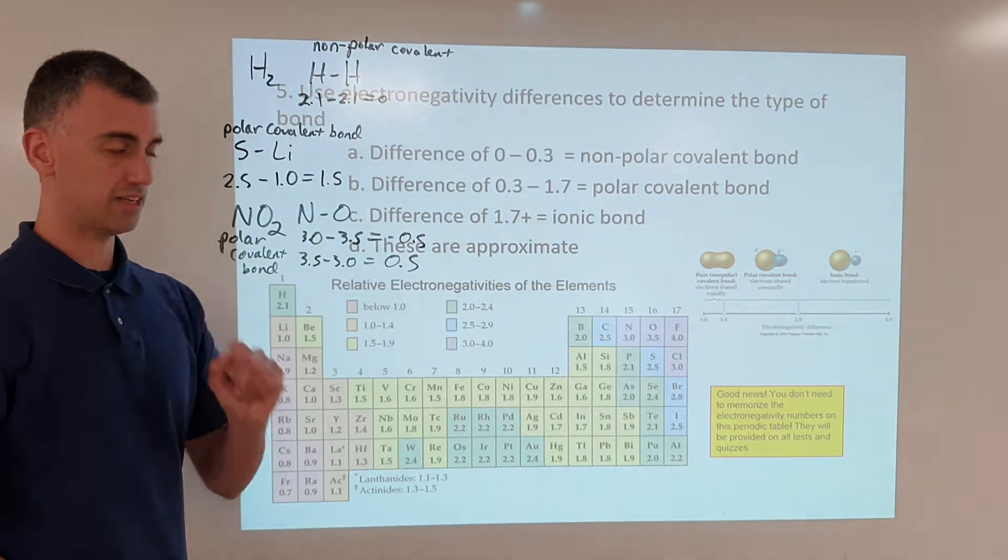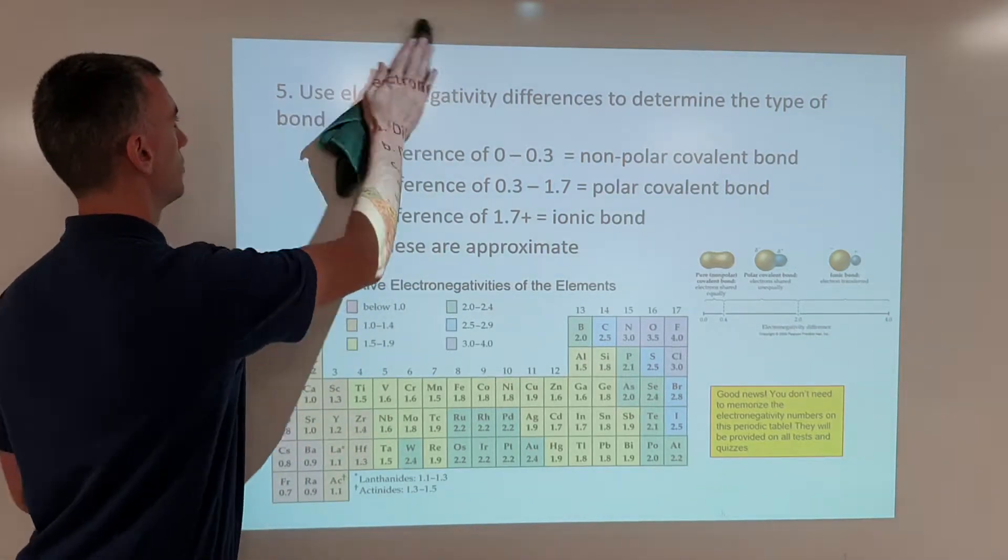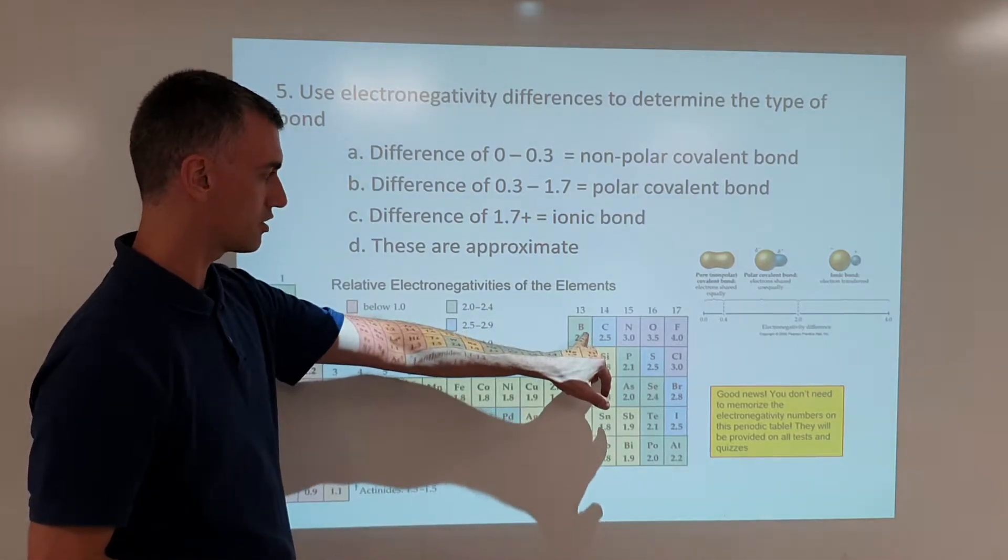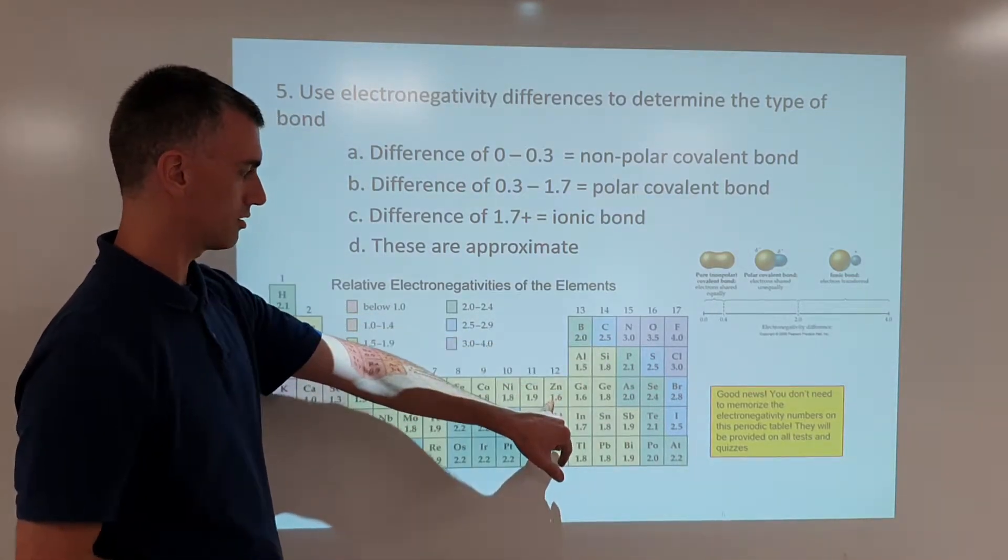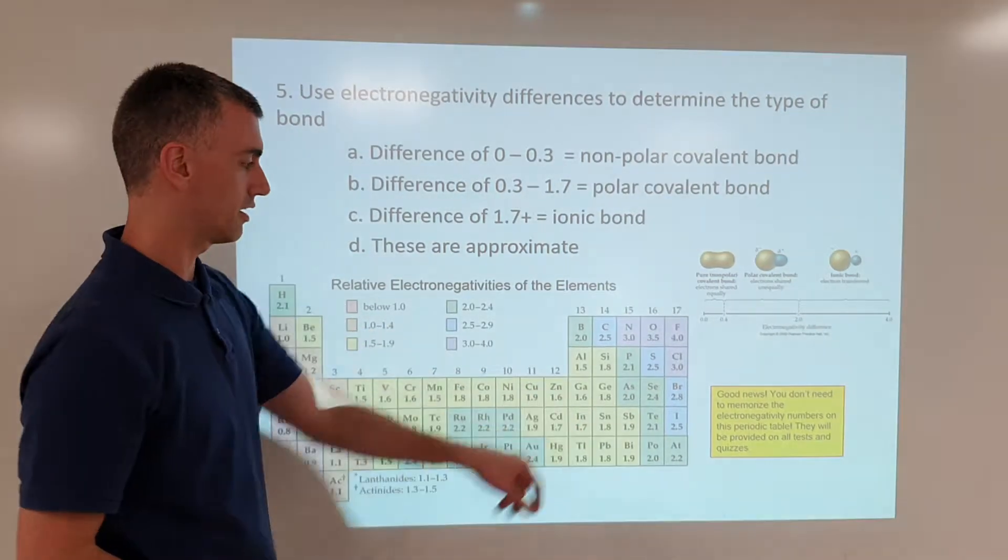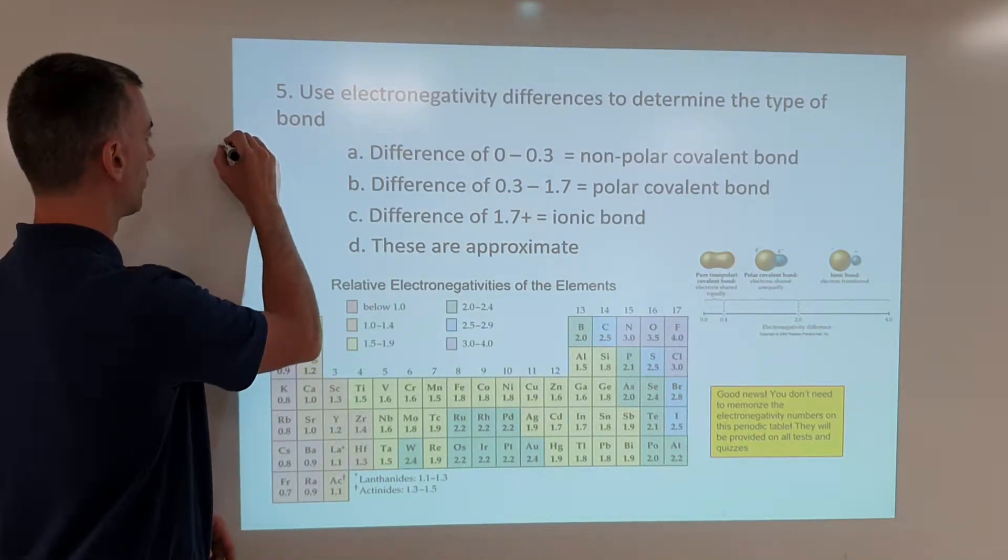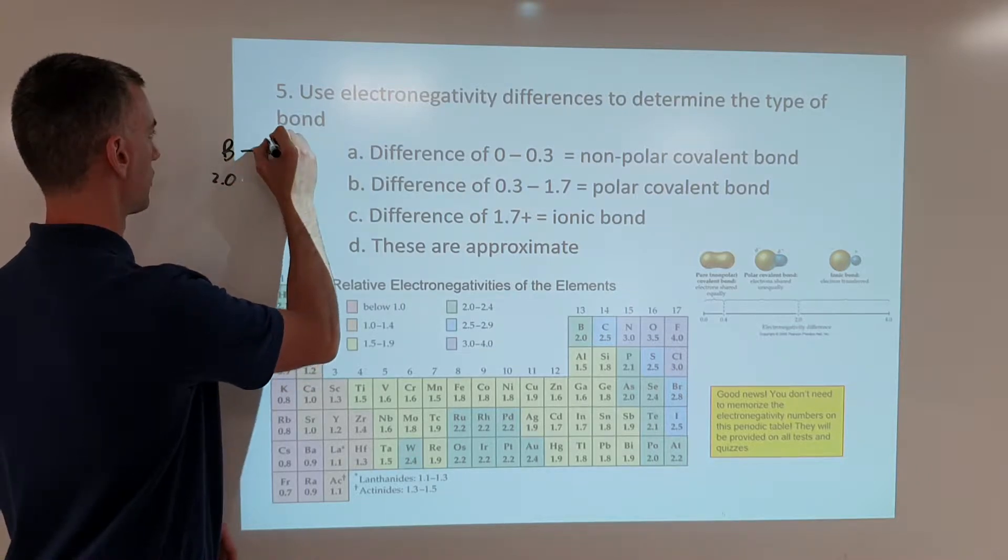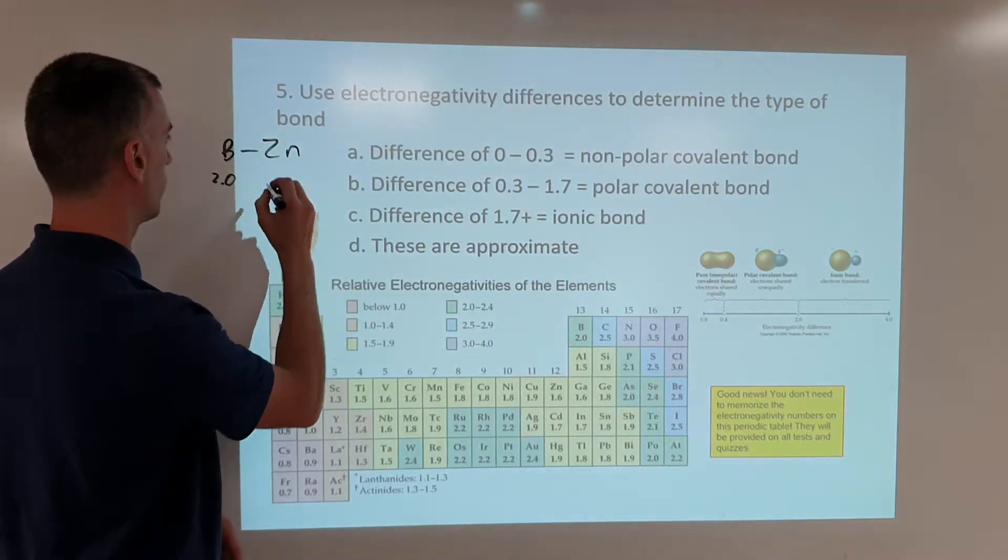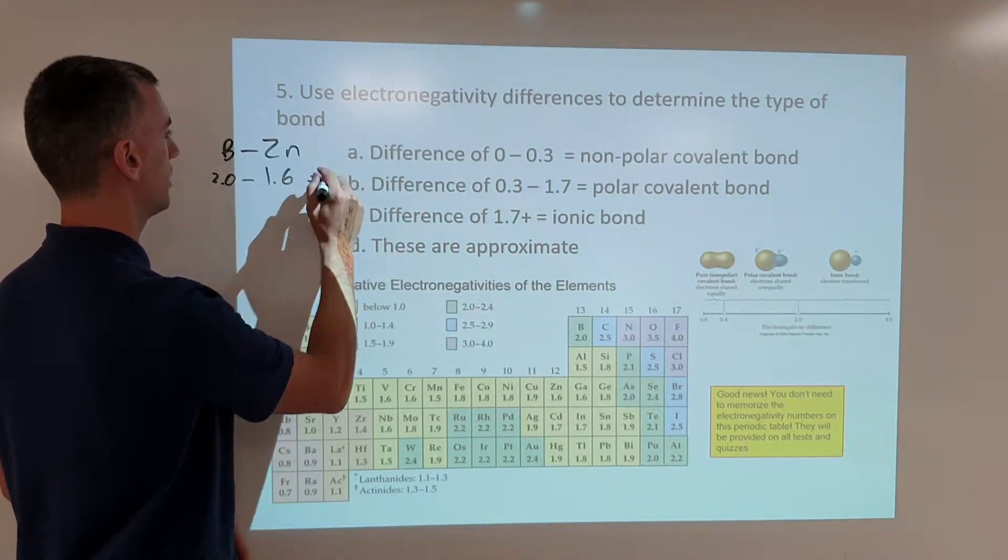Now, one other interesting case to look at would be the fact that a nonmetal, such as boron, and a metal, such as zinc, might typically be expected to form an ionic compound. We did say nonmetals bond with metals to make ionic compounds. But if you test that, boron is 2.0, zinc is 1.6.